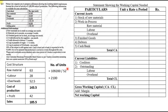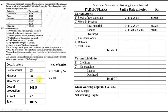Format: Current Assets — unit, rate, period, amount. Stock of Raw Material: 2,100 units × ₹63 × 4 weeks = 5,29,200. Work-in-Progress — Raw Material: 2,100 × 63 × 2 = 2,64,600. For labor and overheads under WIP, take half the value since completion is 50%. Labor: 2,100 × 28 × 2 × 0.5 = 58,800. Overheads: 2,100 × 52.5 × 2 × 0.5 = 1,10,250.